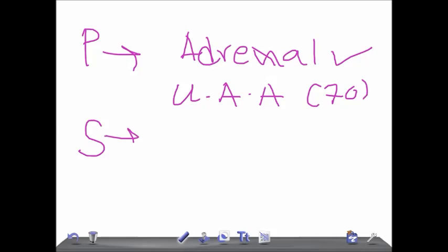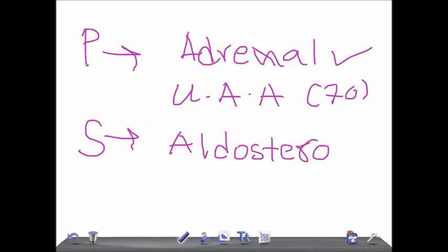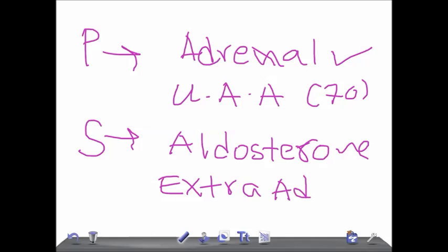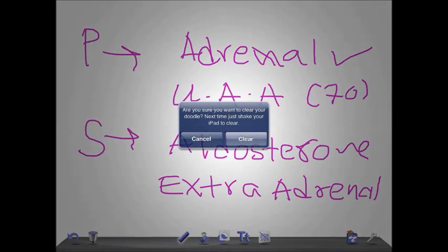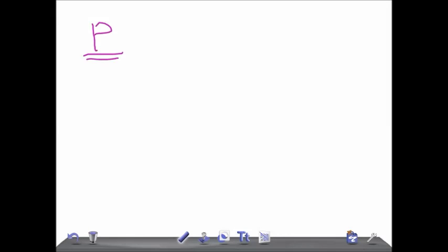Now, in secondary Hyperaldosteronism, the aldosterone levels are raised, but the cause is not within the adrenals. The cause is extra-adrenal — someone is stimulating the adrenals to secrete more aldosterone. So let us take a look at the primary mechanism first.